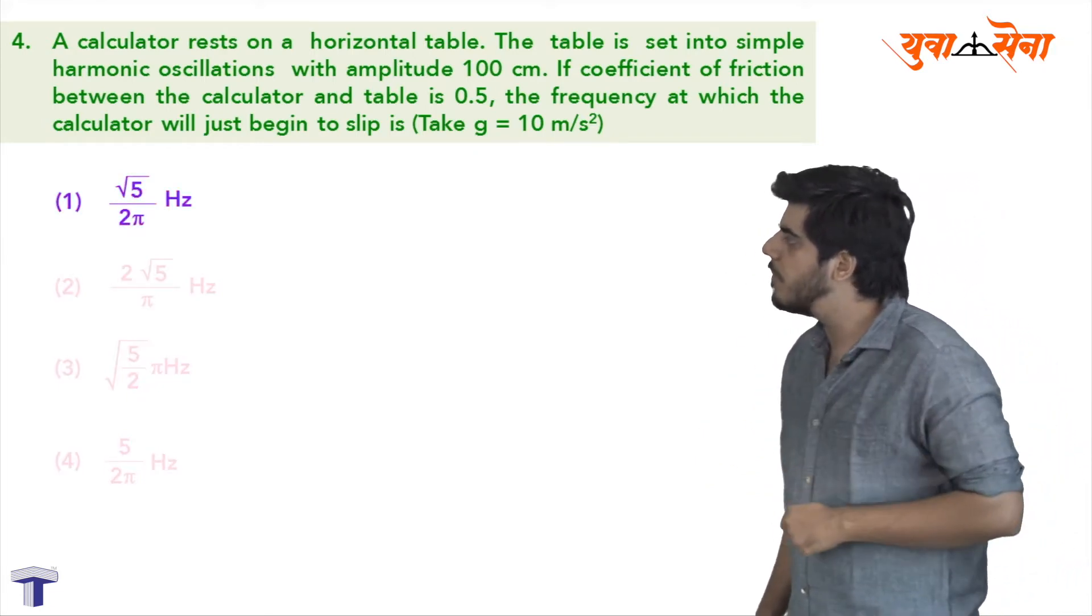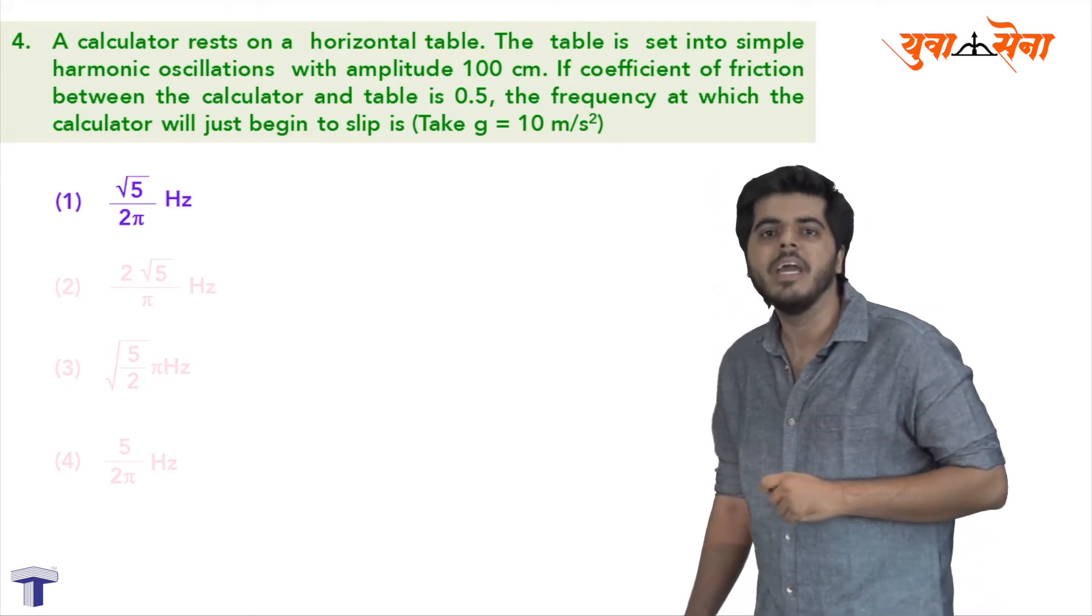The correct option is option number one, that is root 5 upon 2 pi hertz.